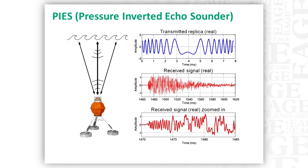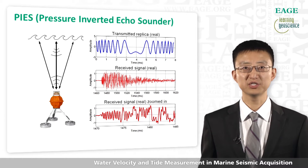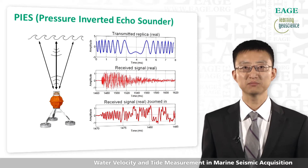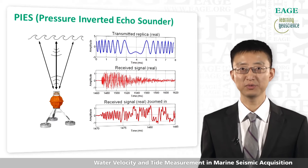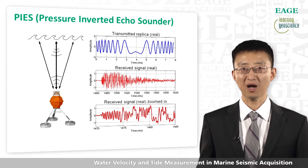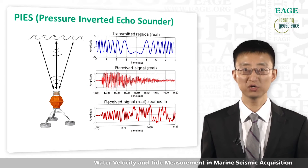This is a seafloor device we developed to do such measurements. It's called PIES, or pressure inverted echo sounder. As the name implies, it includes a pressure sensor to measure water pressure at the seafloor, which can be converted to water depth so that tidal variations can be monitored. It also includes the inverted echo sounder, which measures the two-way water travel time by sending an acoustic pulse and measuring the time it takes to be reflected back from the sea surface. With time and depth, we can calculate the average water velocity and monitor it over time.